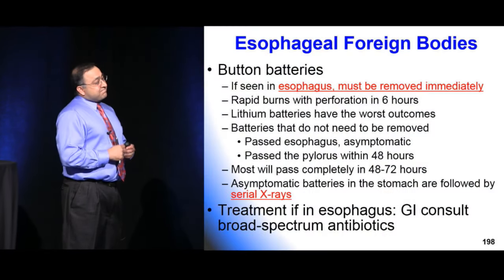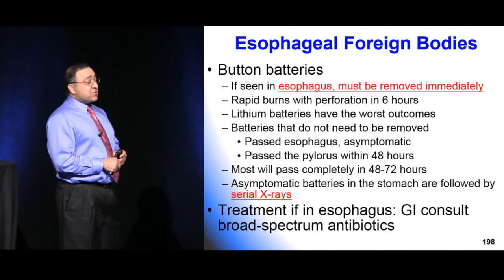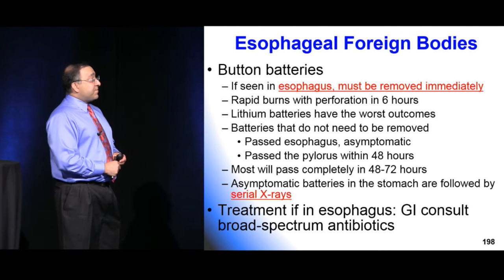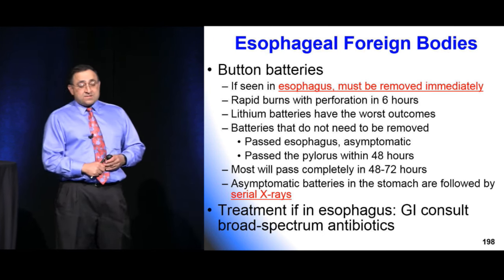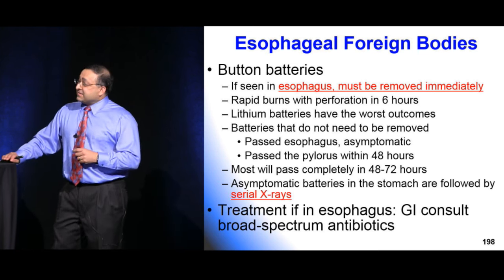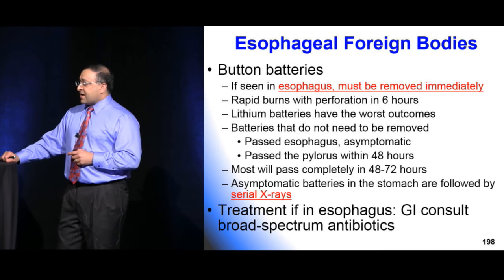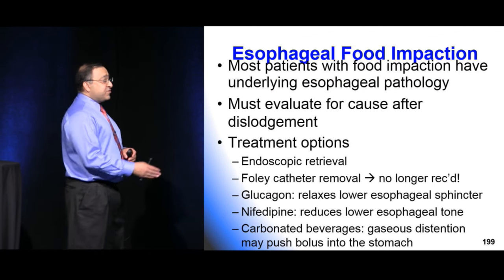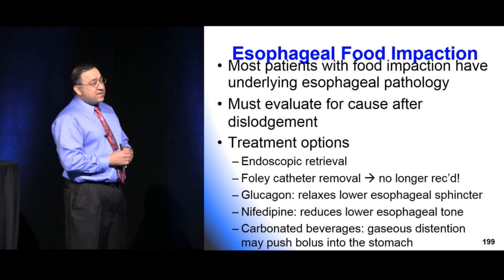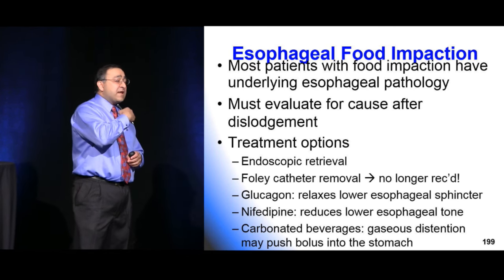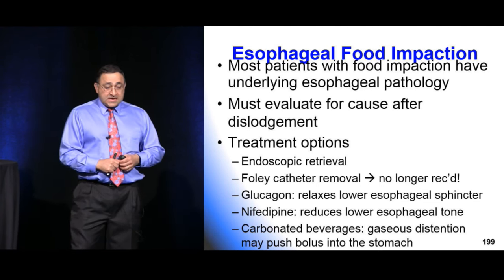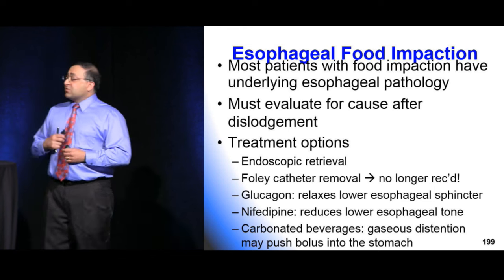For food impaction, the Foley trick is not recommended. If something is visible, use McGill forceps; otherwise get GI or ENT to manage it. Glucagon relaxes the lower esophageal sphincter — give 1-2 mg and it may allow a distally lodged bolus to pass. However, success rate is limited and a major side effect is vomiting, so step back from the stretcher. Nifedipine is also a smooth muscle relaxant sometimes considered, though success is variable.